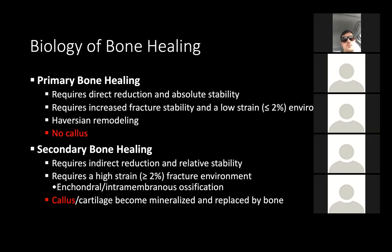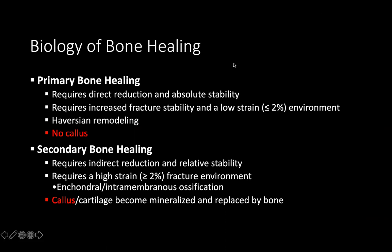The Haversian canals are how the bone remodels. You have two opposing areas with direct bone-to-bone contact, and then no callus formation. Secondary bone healing involves indirect reduction and relative stability — whether by casting or by reduction with internal or external fixation — and requires high strain, greater than 2% of the fracture environment. You have callus formation that forms between one area of the bone and the other.